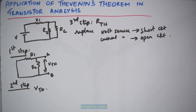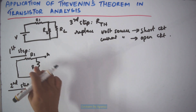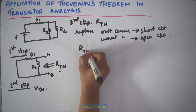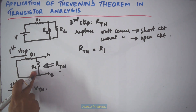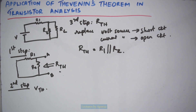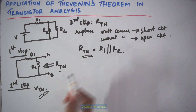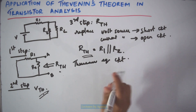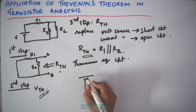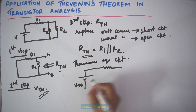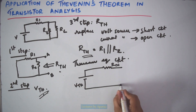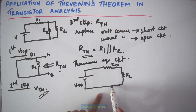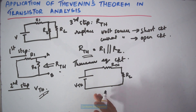So the circuit will become like this. I have to find the effective resistance by looking from this side — that will be the Thevenin's resistance. RTH here will be R1 parallel to R2. Now we have VTH and RTH, so we can draw the Thevenin's equivalent circuit: VTH is connected here, then RTH, and then we connect back the load RL. This circuit has become this form, and thus the analysis will become easier.